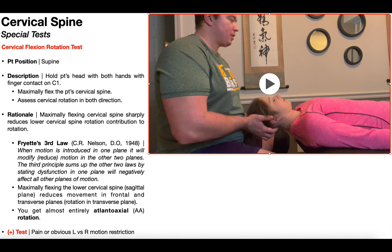To perform the cervical flexion rotation test, the patient is positioned supine, and you're going to be holding the patient's head with index finger contact on C1. If you have trouble finding C1, find the C2 spinous process and go just superior to that — you shouldn't feel anything, just a space with no palpable bone. That's because the posterior tubercle of C1, which is its equivalent of the spinous process, is too deep to palpate. So if you find that space above the C2 spinous process, your index fingers are in the right position.